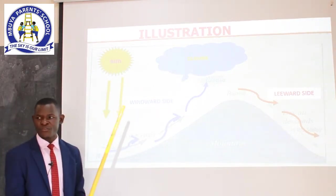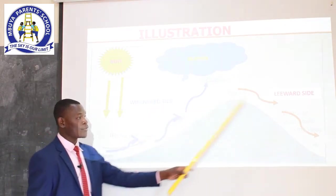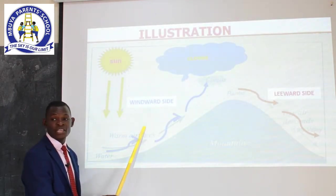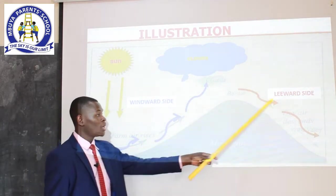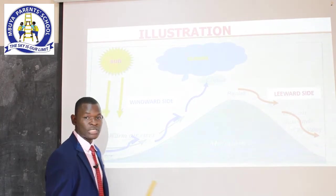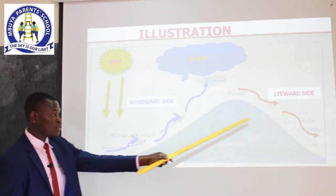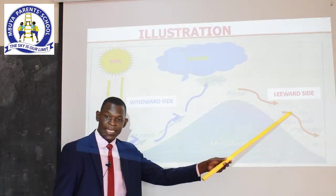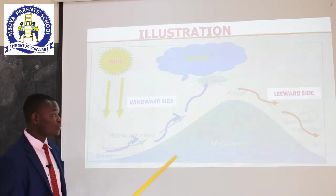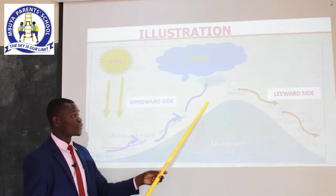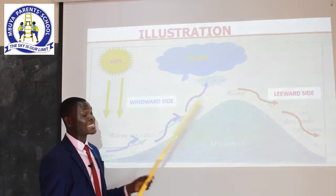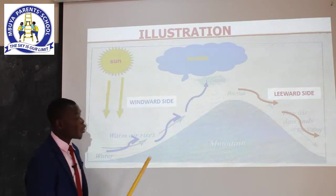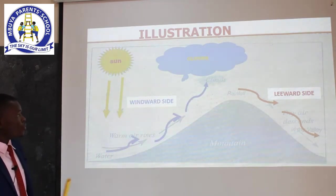As a farmer, you have to know to settle on the windward side because it is what receives rainfall. If you resettle the leeward side of the mountain, you are most likely to lose your plants, because it receives little or no rainfall — it is a rain shadow. In northeastern Uganda, the Karamoja region is on the leeward side of Mount Moroto, so it does not receive enough rainfall.